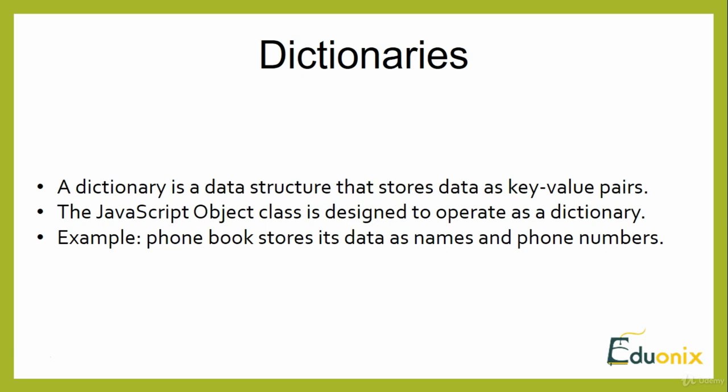Dictionary follows a JavaScript object — the JavaScript object class is designed to operate as a dictionary. In this chapter, we will use the features of an object class to build a dictionary class that simplifies working with dictionary-type objects. You can perform the same functions as discussed in previous chapters, but creating a dictionary class makes it easier and more fun. A basic example for understanding dictionary would be a phone book storing names and phone numbers.